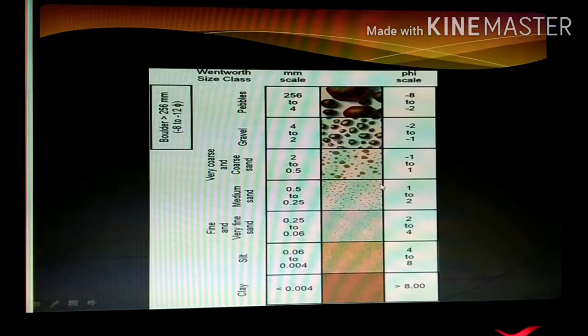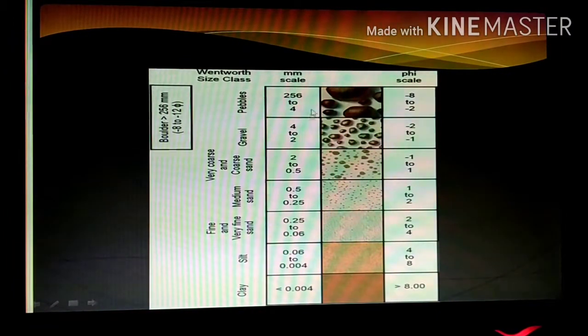Now this is a Wentworth scale for the size of the grain. This is a phi scale and here it is in 2 mm. The size of the particle, if it is more than 256 mm, we consider it as a boulder. From 256 to 4 mm, we see it as pebble. From 4 to 2 mm, we see it as gravel.